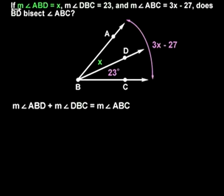Since the measure of angle ABD equals x, the measure of angle DBC equals 23, and the measure of angle ABC equals 3x minus 27, we can set up the equation x plus 23 equals 3x minus 27.